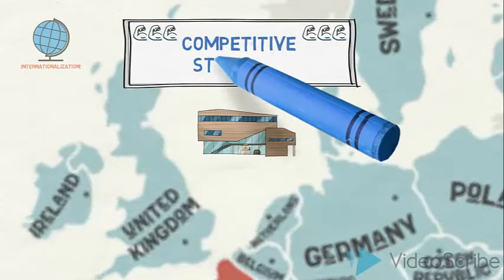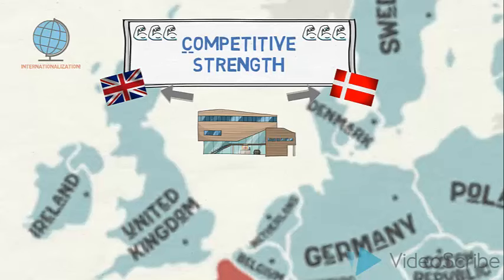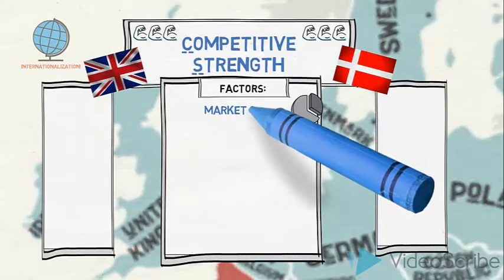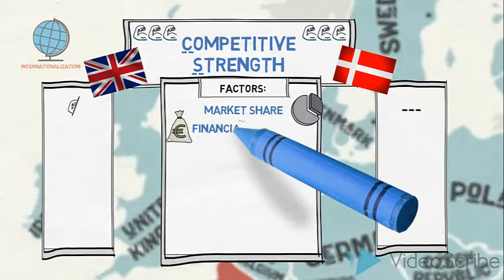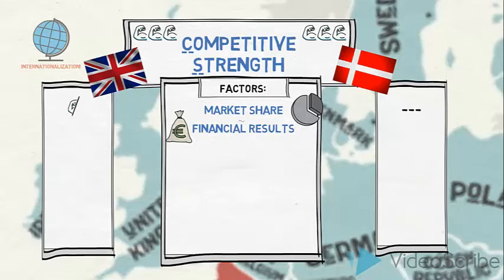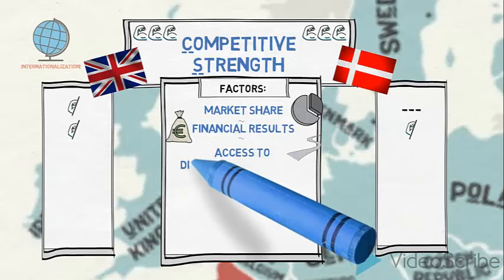Now we will evaluate French Cakes' competitive strength on each of the two markets. Firstly, their current market share in each market has an obvious influence on competitive position. They have established a small — almost undetectable — market share in the UK, so let us provide half a bicep for this score. In Denmark the market share is non-existent; they have only had small sporadic export orders. Their current financial results show that although almost insignificant, they have made a small profit in both markets.